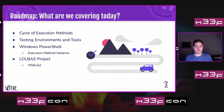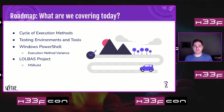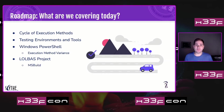A quick roadmap of what we're covering today: we'll go over the cycle of execution methods as a whole, how they build on top of each other; then a bunch of resources on what you'll need for testing and tools; then we'll dive deep into Windows PowerShell and the different execution method variants you can test; and finally we'll talk about the LullBass project and MSBuild to close it out.